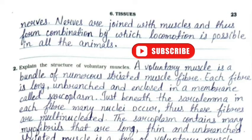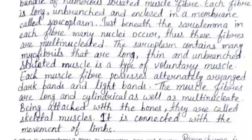Question 2: Explain the structure of voluntary muscles. A voluntary muscle is a bundle of numerous striated muscle fibers. Each fiber is long, unbranched, and enclosed in a membrane called sarcolemma. Just beneath the sarcolemma, many nuclei occur in each fiber, making these fibers multinucleated. The sarcoplasm contains many myofibrils that are long, thin, and unbranched. Each muscle fiber has alternately arranged dark and light bands. The fibers are long, cylindrical, and multinucleate. Being attached to bones, they are called skeletal muscles and are connected with the movement of limbs.